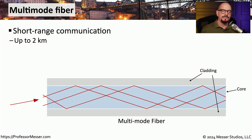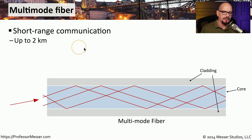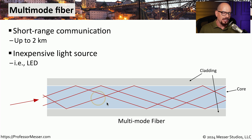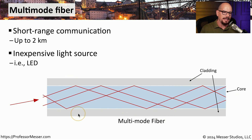We will generally install one of two different types of fiber optic cables: multi-mode fiber or single-mode fiber. Multi-mode fiber is commonly used for relatively short-range communication, up to around two kilometers in distance. Often this uses an inexpensive light source such as a light-emitting diode, or LED. The core of the fiber optic is relatively large — certainly larger than the wavelength of the light — and because of that, the light can use different modes to transmit through that fiber. You can see the different modes bouncing off the edges of the fiber optic cable, which is why we refer to it as multi-mode fiber.